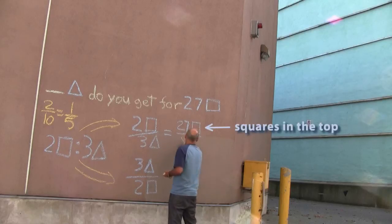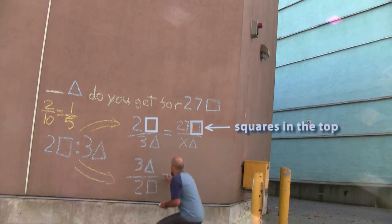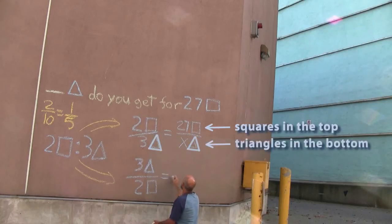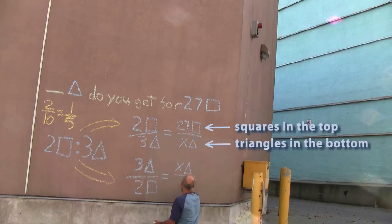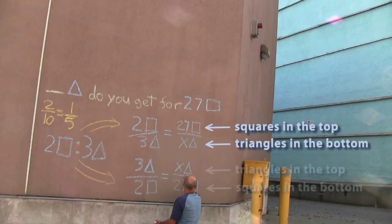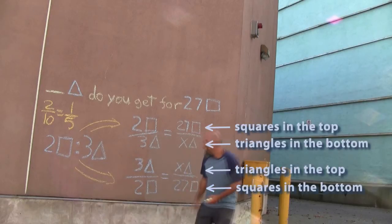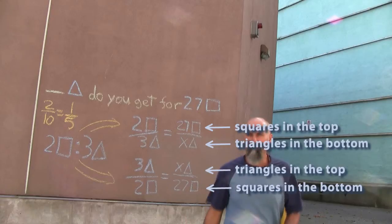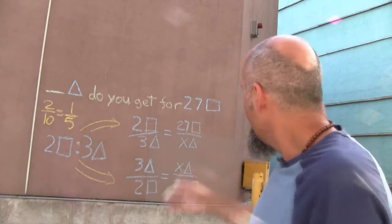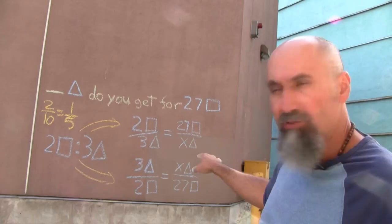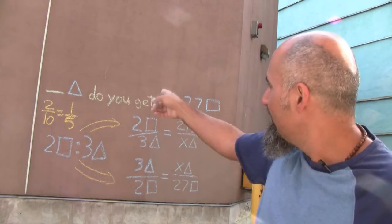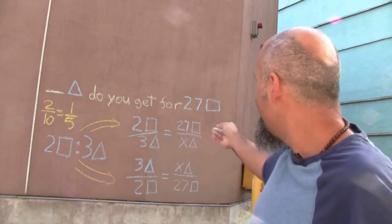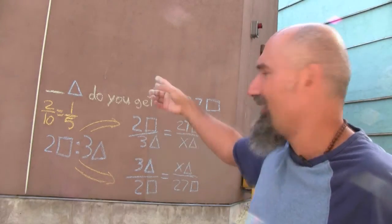Keep in mind there's a lot of symmetry in mathematics. If you put squares on the top of one side of the equation, squares have to go on top of the other side. Triangles in the bottom means triangles go in the bottom on the other side. So we end up creating two different equations to solve for the unknown. Instead of leaving a blank, in mathematics we use X — X marks the spot.